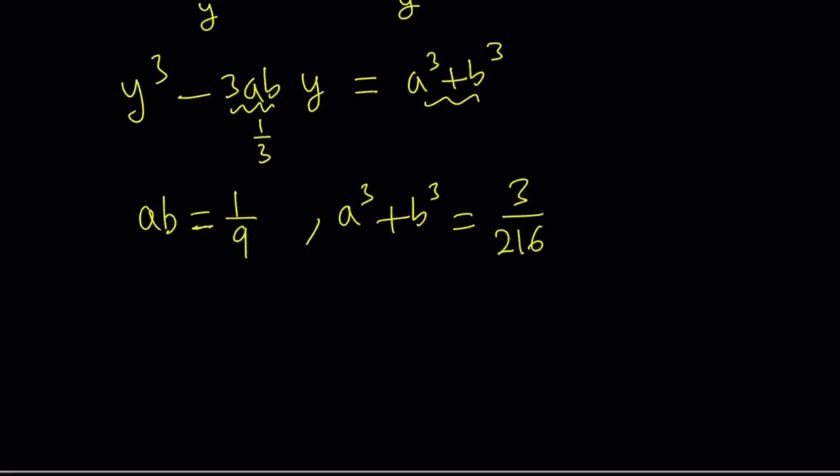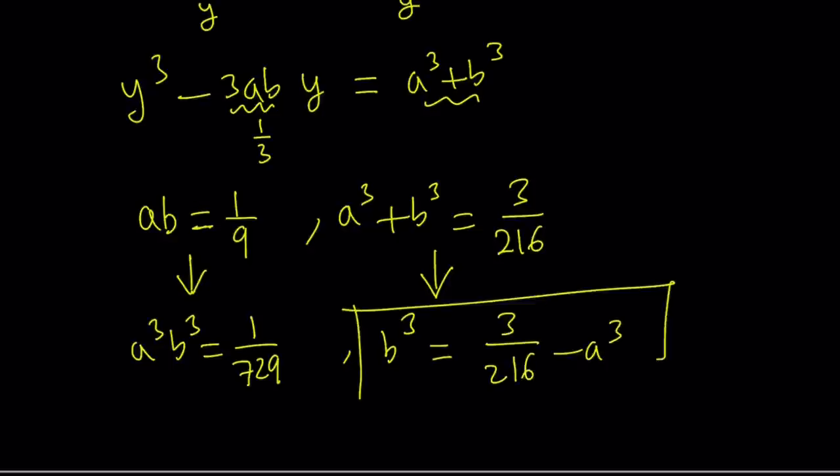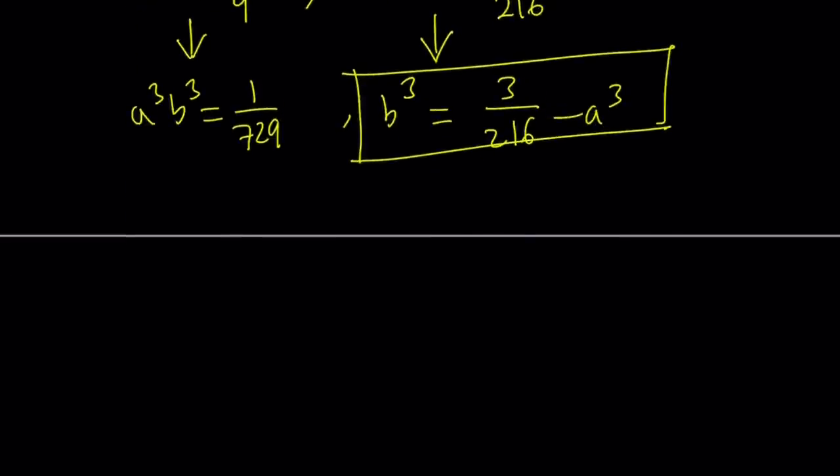But guess what? Even though this system looks cubic, it's actually quadratic. We can go ahead and cube both sides. a cubed times b cubed equals 1 over 729, which is 9 cubed. And then here a cubed plus b cubed, we can isolate b cubed. Write it as 3 over 216 minus a cubed.